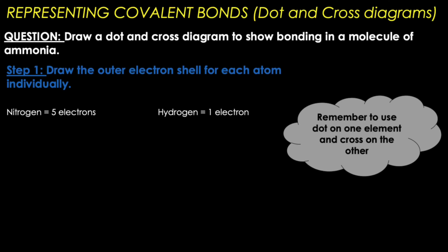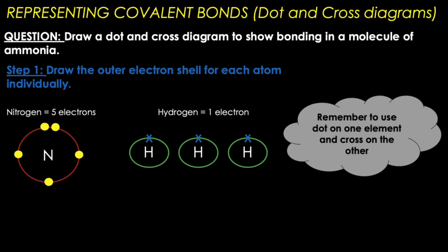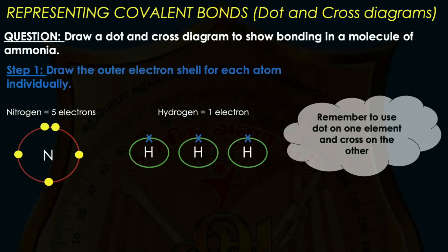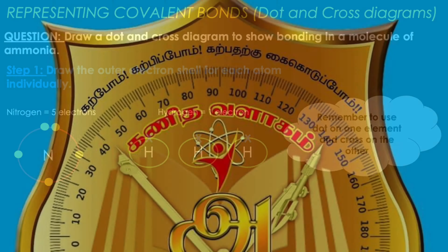Covalent bonds are represented using dot and cross diagrams. Let's look at a question together: draw a dot and cross diagram to show bonding in a molecule of ammonia. Step one: draw the outer electron shell for each atom individually. So here's nitrogen and here are three hydrogen atoms. Remember to use a dot for one element and a cross for the other, so that the sharing of electrons can be evident.